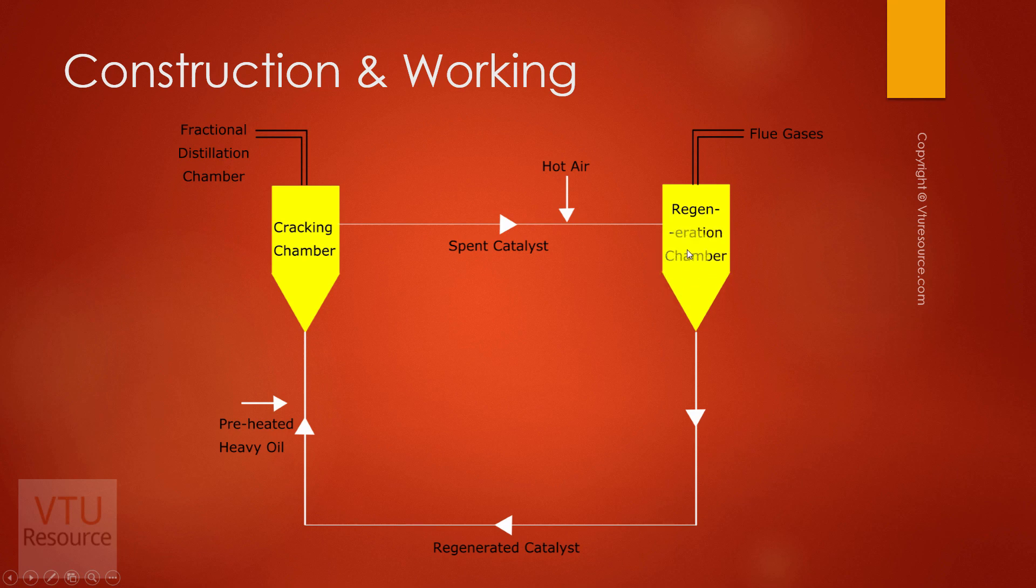In the regeneration chamber, the elemental carbon present on the catalyst is burnt off, and the catalyst is regenerated. The regenerated catalyst is mixed with heavy oil and is sent into the cracking chamber.